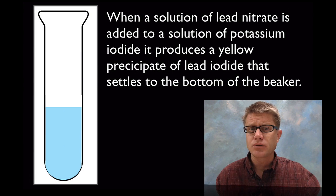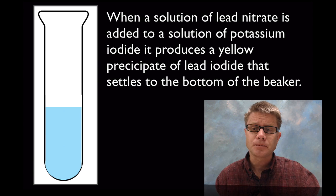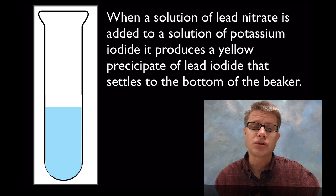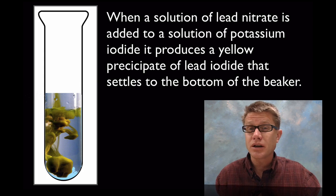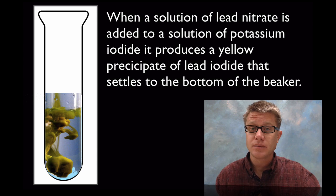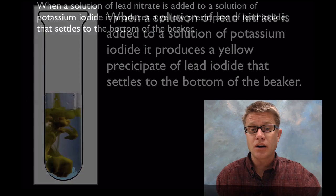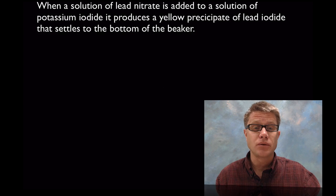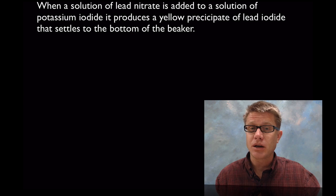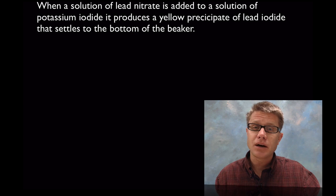Now let's go to an aqueous reaction. We're taking lead nitrate, which is clear, and adding it to a solution of potassium iodide, and it produces a yellow precipitate — a solid that comes out of solution. I could observe that, know what those chemicals are, and write it out: a solution of lead nitrate plus a solution of potassium iodide making a yellow precipitate of lead iodide that settles to the bottom. The next thing is to write out my reactants and products.